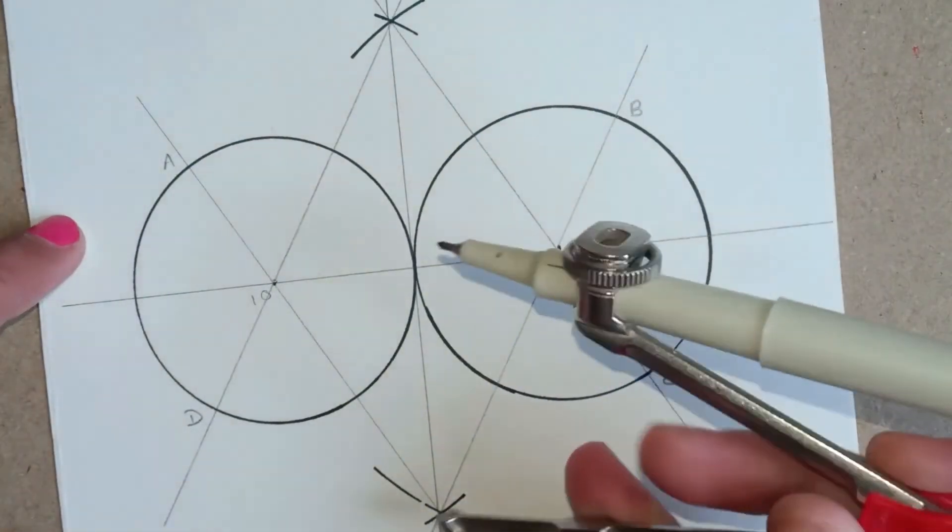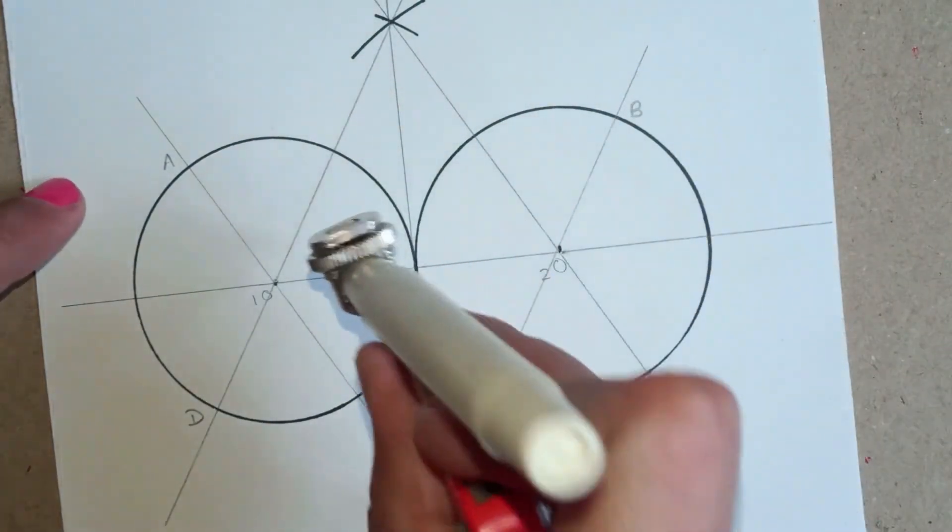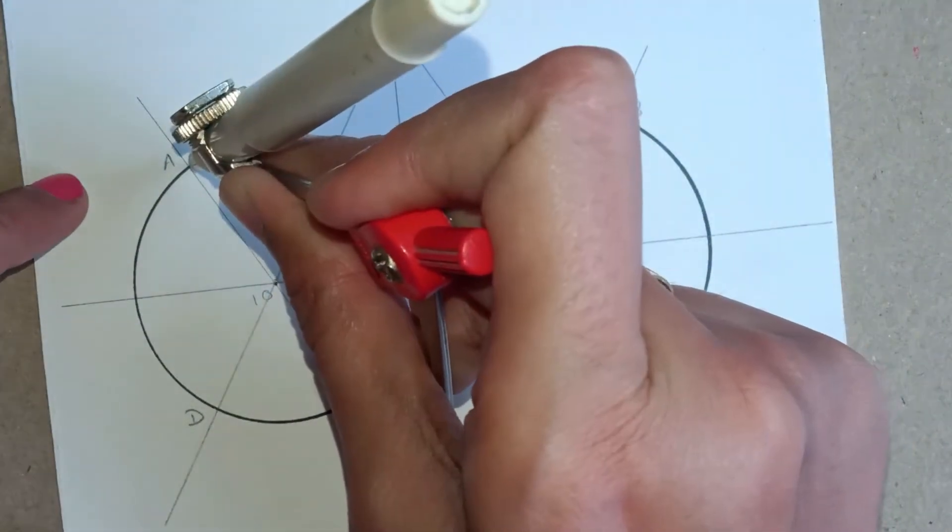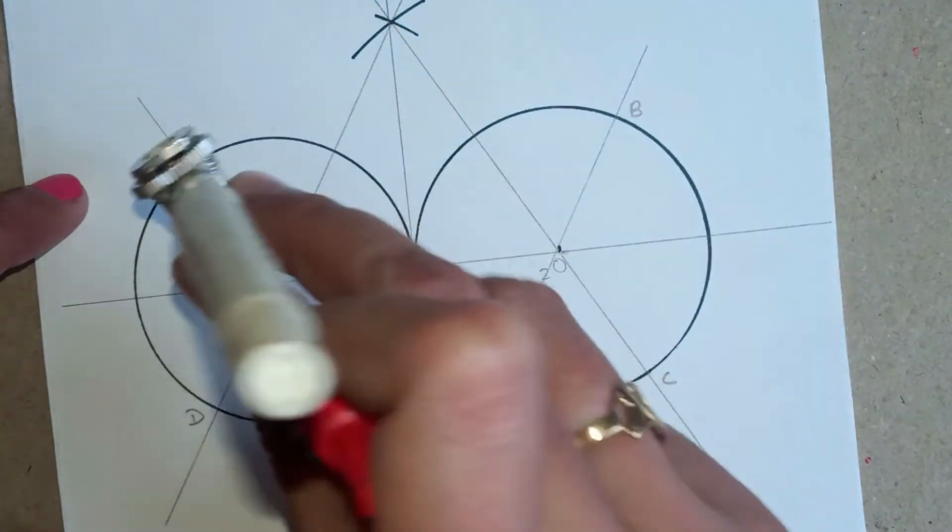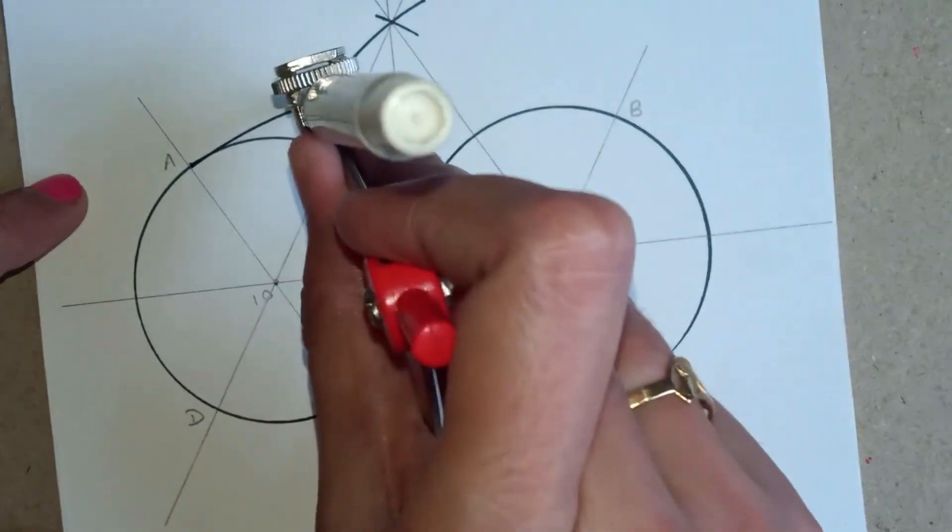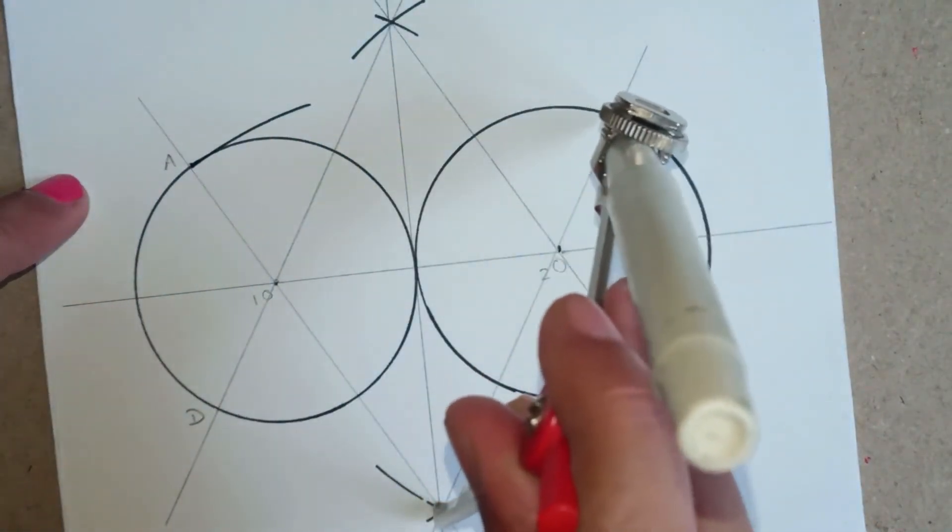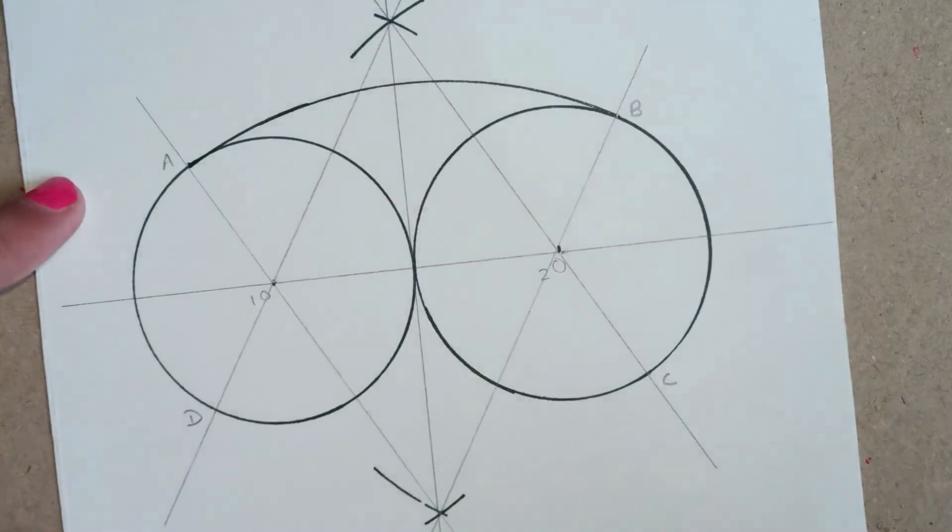To join A-B, we will put our pointer of the compass at the bottom arc. We will measure the distance till A and extend the arc till it touches B.